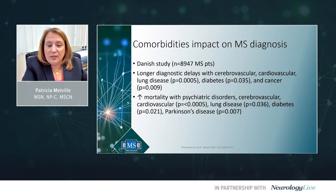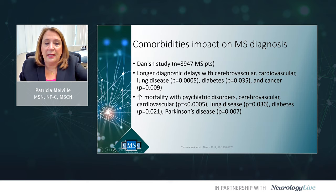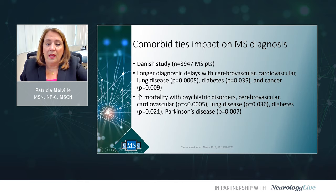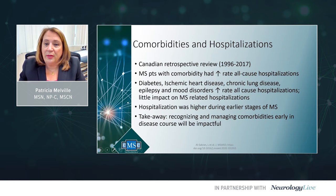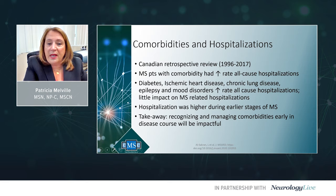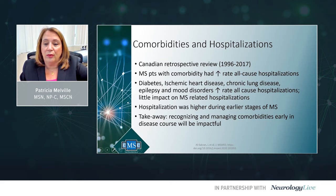Comorbidities can also impact MS diagnosis. A Danish study of 8,900 MS patients saw delays in diagnosis in patients with cerebrovascular, cardiovascular, lung disease, diabetes, and cancer. There may also be increased mortality in MS patients with psychiatric disorders, cerebrovascular disease, cardiovascular disease, lung disease, diabetes, and Parkinson's disease. A Canadian retrospective review from 1996 to 2017 found MS patients with comorbidity had increased all-cause hospitalizations. Patients with diabetes, ischemic heart disease, chronic lung disease, epilepsy, and mood disorders had increased hospitalization rates, but interestingly little impact on MS-related hospitalizations. Hospitalization was higher during the early stages of MS, and recognizing and managing comorbidities early in the disease course will have a positive impact.